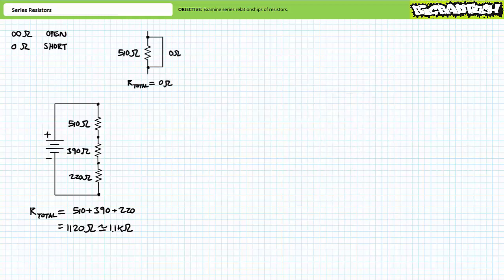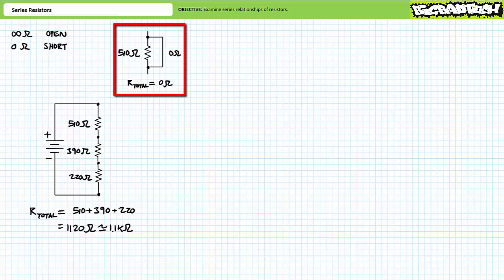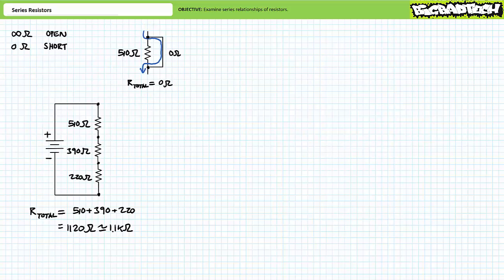Let's now deal with shorted elements in series circuits. A short is a low-resistance path around or in parallel with an element. Consider a 510 ohm resistor with a zero-ohm wire in parallel. When presented with a 510 ohm path or a zero-ohm path, undoubtedly the zero-ohm short presents a far easier means of travel. All current will be routed around the shorted resistor, which effectively presents a zero-ohm resistance path.